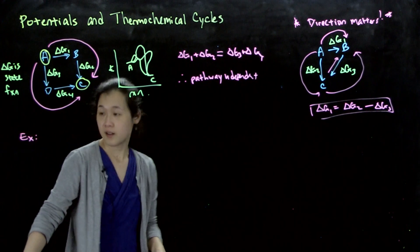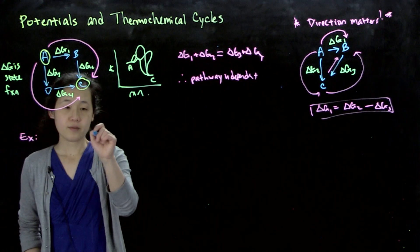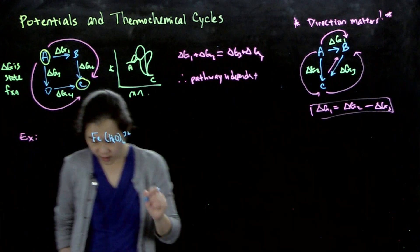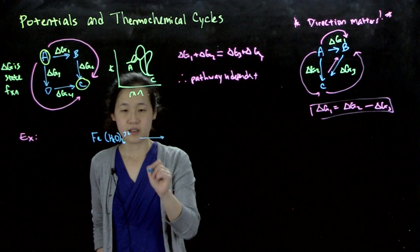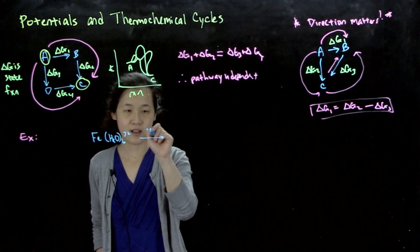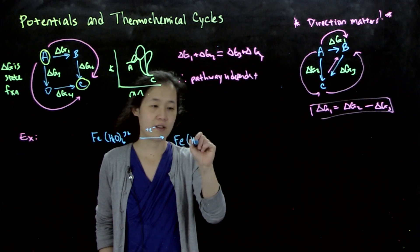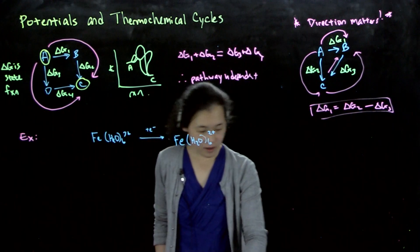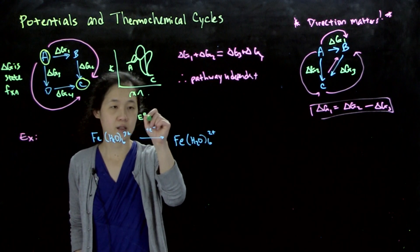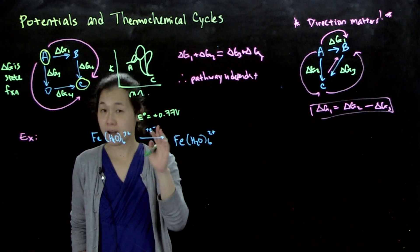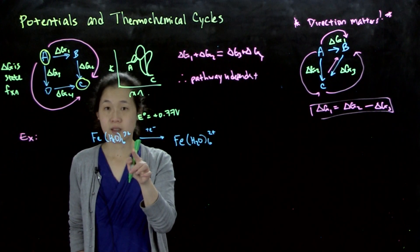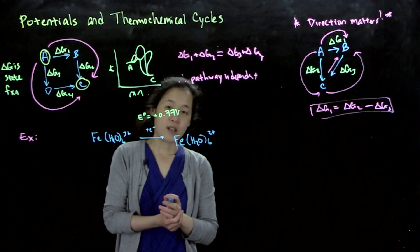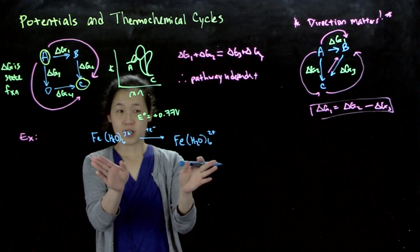Here's an example of how we can use a thermochemical cycle to think about chemistry if we have some potentials. We know that aqueous iron 3+ — if you reduce it by adding an electron — goes to aqueous iron 2+, your ferrous ion. This has a standard reduction potential E° equals plus 0.77 volts. This is the standard reduction potential of iron 3+, so this is a half reaction, not a balanced electrochemical equation. The question I want to know is: if I have iron 3+ and iron 2+, which binds more strongly to cyanide?